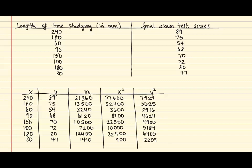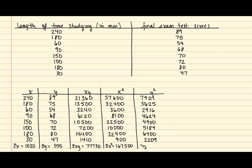Now that we have our table created, we can finally find the sums of each column. The sum of x is equal to 1,030. The sum of y is 555. The sum of xy, once you add them all up, is 77,730. For the x squared column, the sum of x squared is 167,500. And for our final column, once we sum all of the y squared values, we get 39,779.